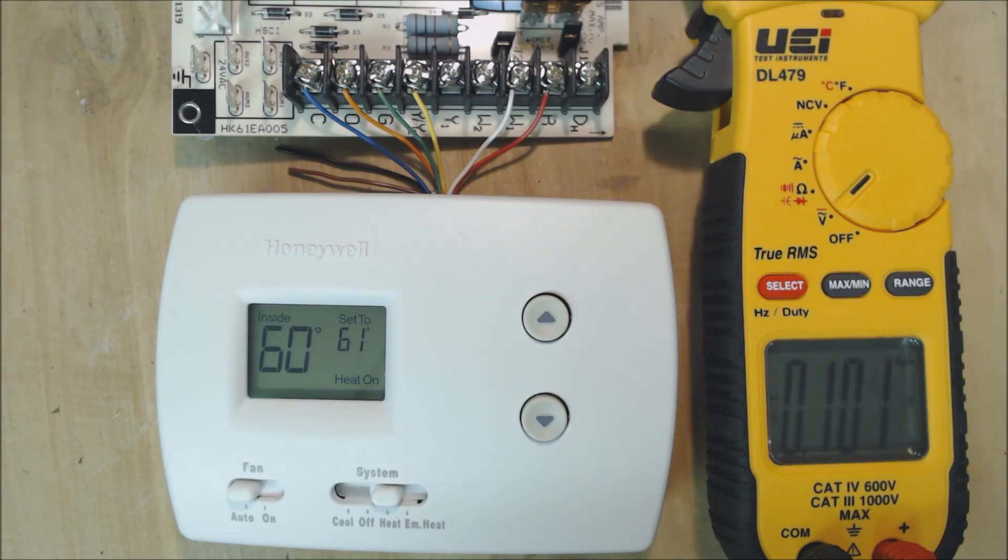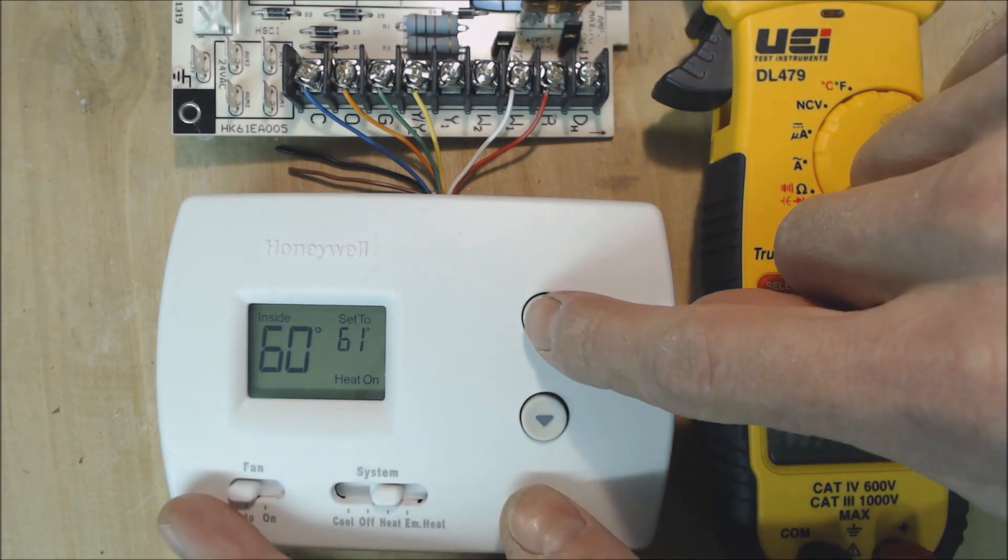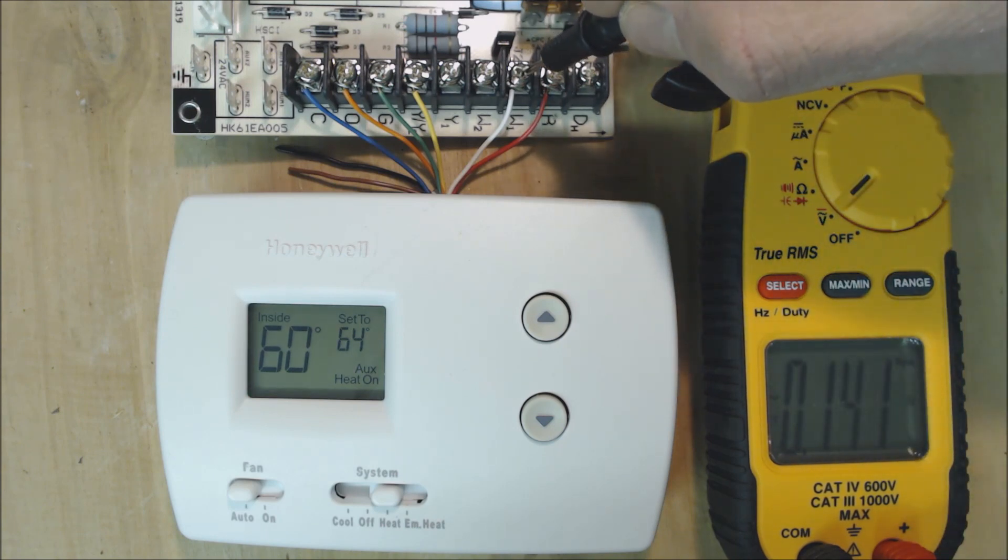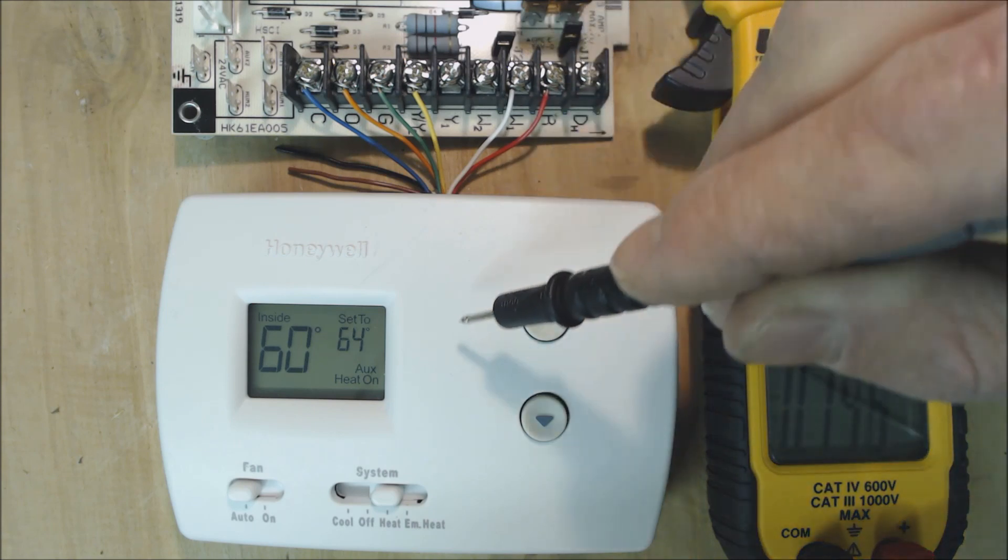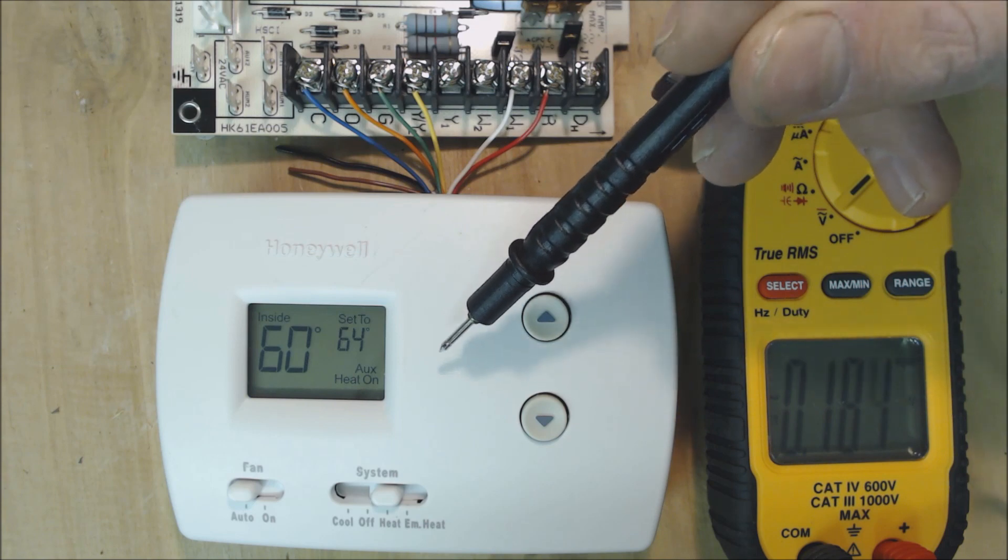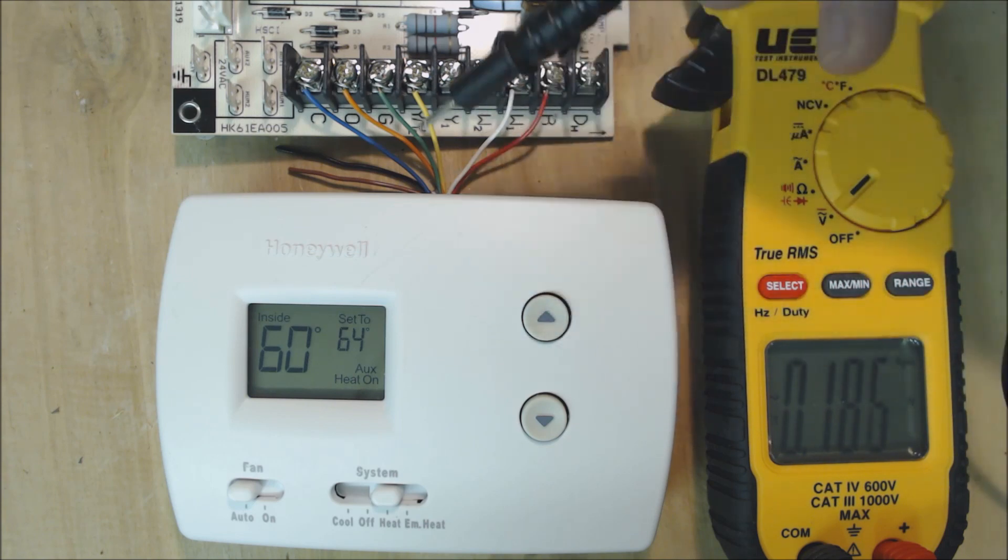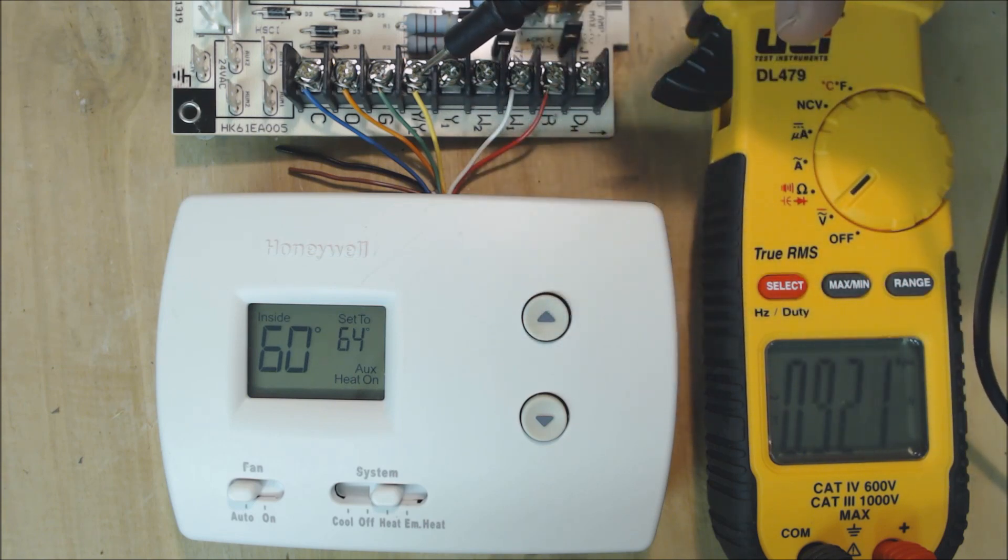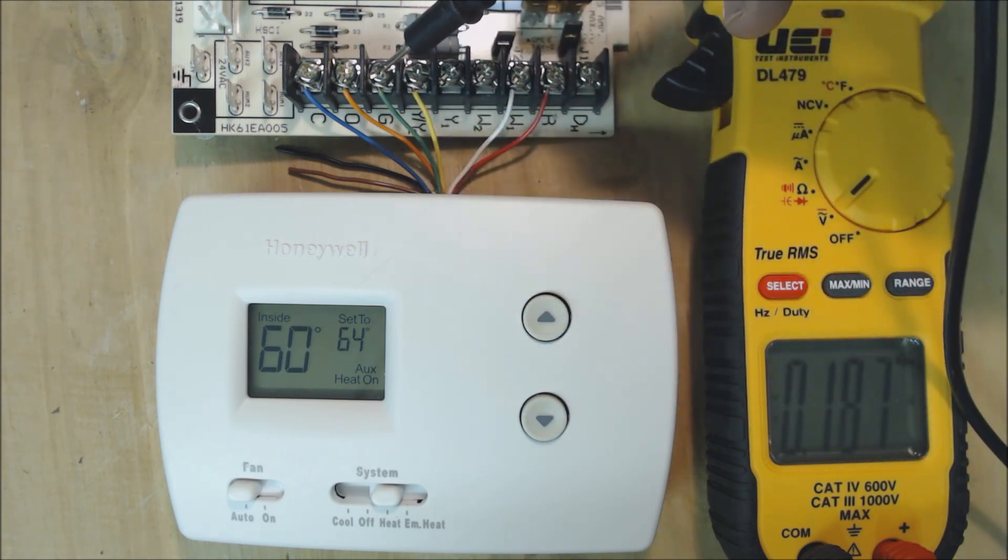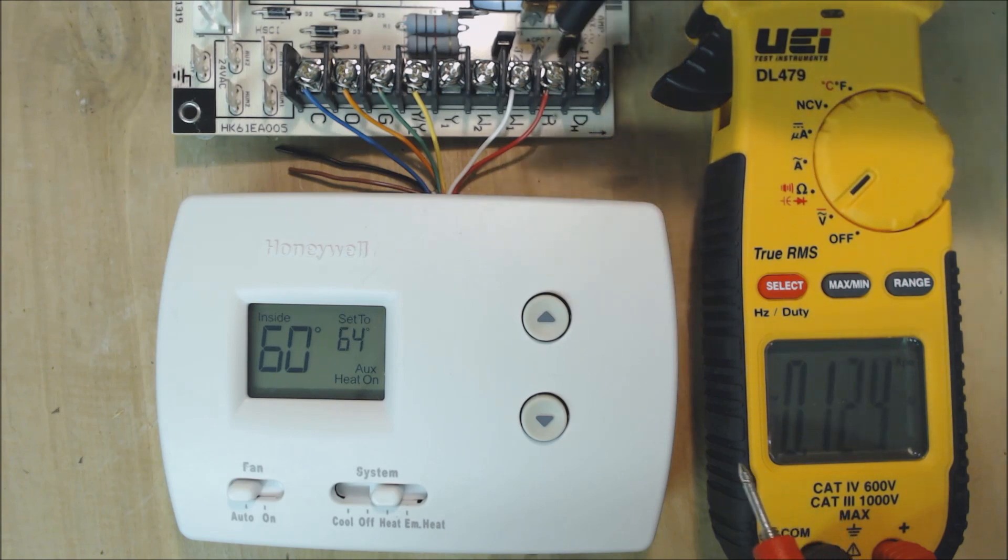Now if we want to test auxiliary heat, we're going to turn this several degrees up higher, and then we should have our auxiliary heat turn on. When our auxiliary heat turns on, we're going to be able to test from W to common. We're going to get 24 volts because R comes into the thermostat and now touches W. It touches Y still because the heat pump is running, but you also have auxiliary heat running, and R touches G.